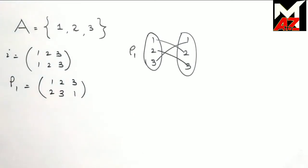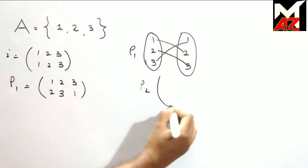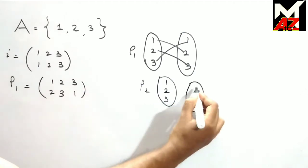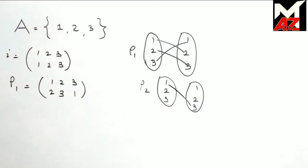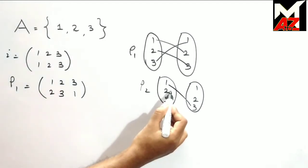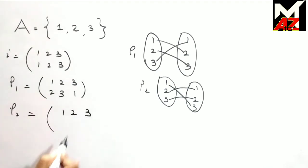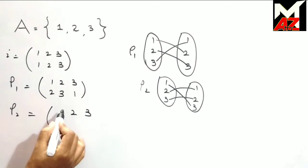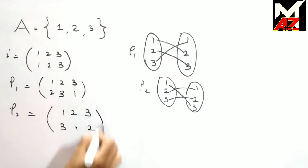Similarly, we consider ρ2: 1 goes to 3, 2 goes to 1, and 3 goes to 2. So ρ2 is written as (1 2 3 / 3 1 2).